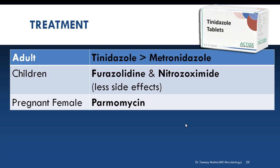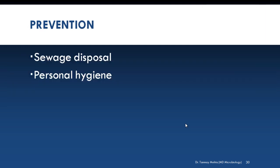Treatment: for adults, tinidazole 2g as a single dose and metronidazole 25mg twice daily for at least 7 days are recommended. In children, less toxic drugs like furazolidone and nitazoxanide are recommended. For pregnant females, the non-teratogenic drug paromomycin is prescribed. Prevention: giardiasis can be prevented by proper disposal of wastewater and feces, practice of personal hygiene like hand washing before eating, proper disposal of diapers, and prevention of food and water contamination. Community chlorination of water is ineffective for inactivating the cyst; boiling of water is effective.